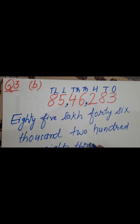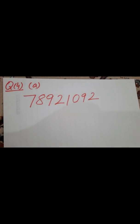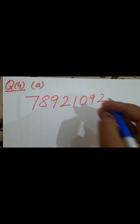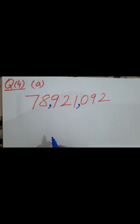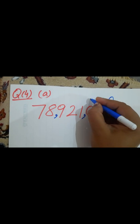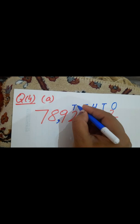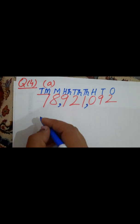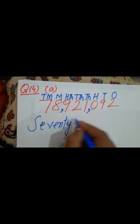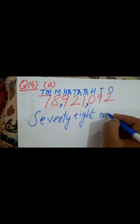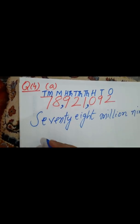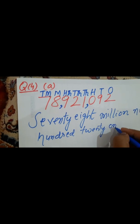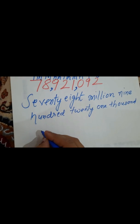Now question number 4: insert commas suitably and write the names according to the international system of numeration. In the international system, you insert commas after every 3 digits from the right, then skip 3 digits and insert comma again. The digit positions are: ones, tens, hundreds, thousands, ten thousands, hundred thousands, millions, ten millions. I will write: 78 million, 921 thousand, 92.